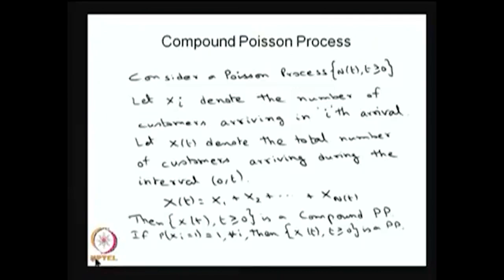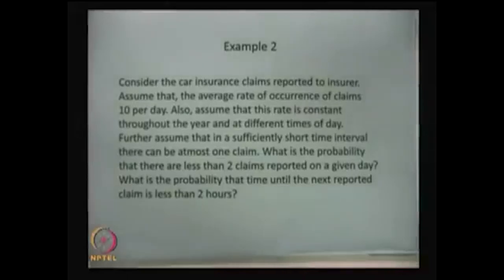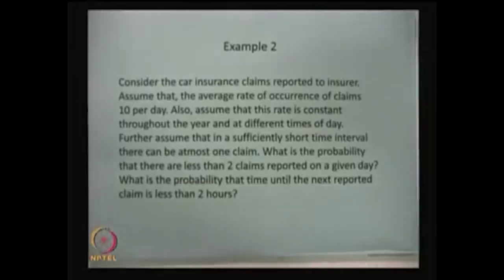Now let me give the solution to the car insurance example that was introduced earlier. We have discussed two problems: one related to bus arrivals and this car insurance problem. In the car insurance problem, the average rate of occurrence of claims is 10 per day, the rate is constant, and in a very small interval of time at most one claim can happen.